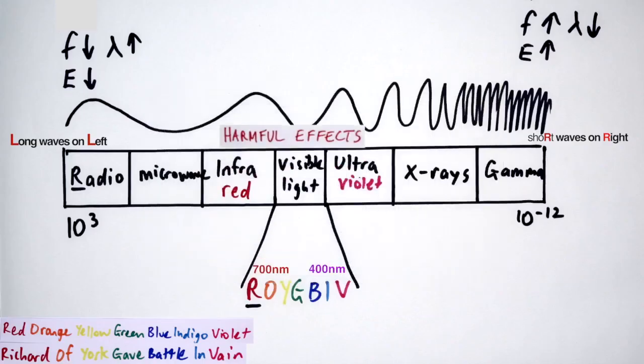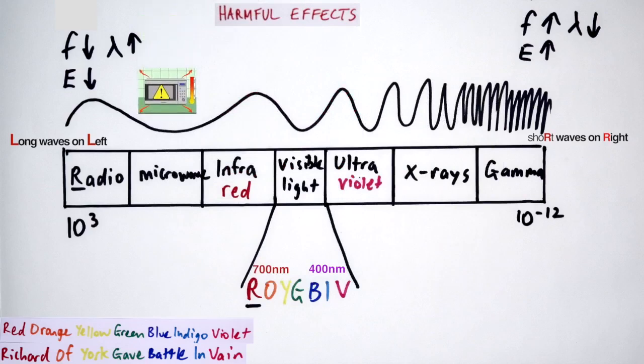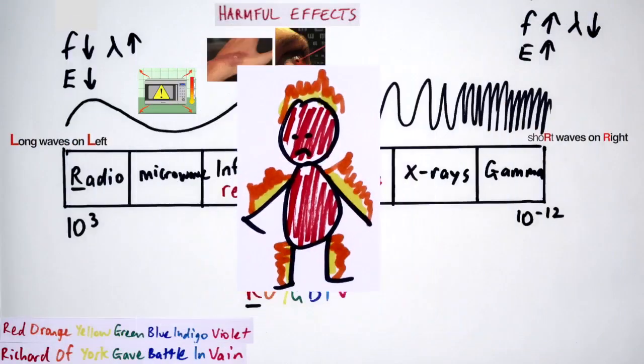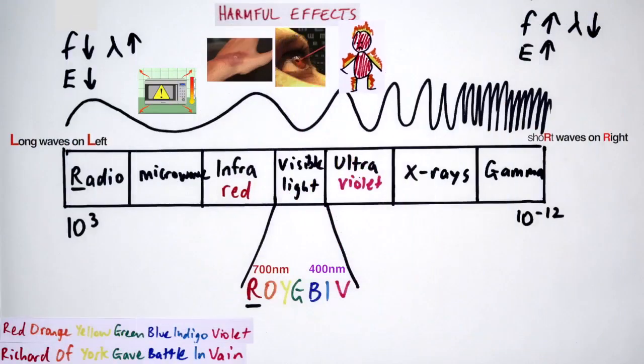Harmful effects of electromagnetic radiation. Microwaves can cause internal heating of body cells. Infrared burns your skin. Intense visible light can cause damage to your eyes. Ultraviolet can cause sunburn damage to skin cells, which can cause skin cancer. X-rays and gamma rays can both cause damage to cells inside your body, causing cancer.